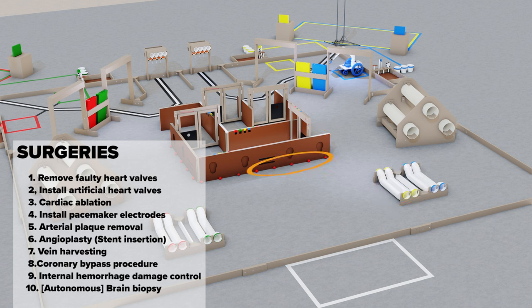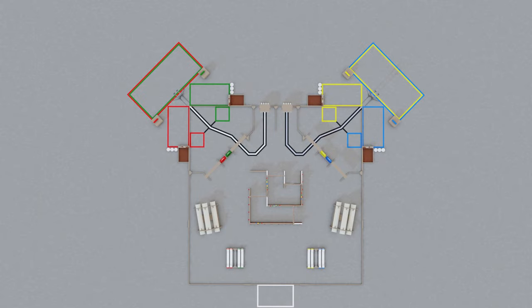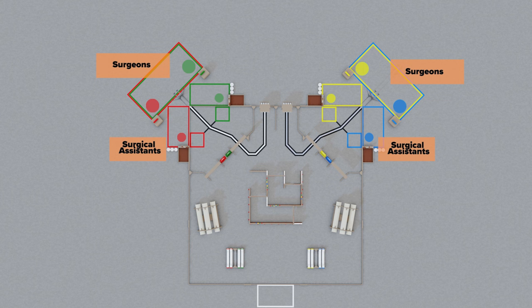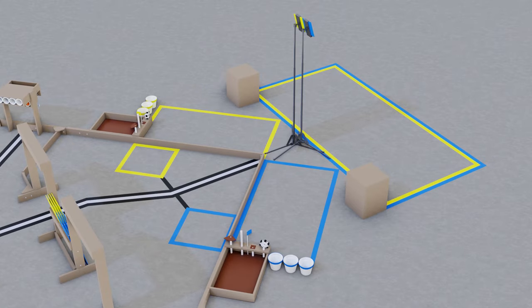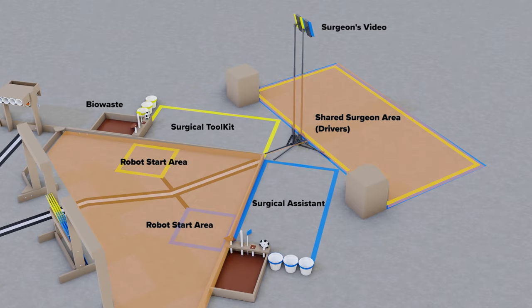A surgeon and surgical assistant are required to manipulate and guide the robot during these surgical procedures. Two teams will share the surgeon's area on each side of the field. This area outside the shoulder incisions is a shared area with two robot start areas for each side.